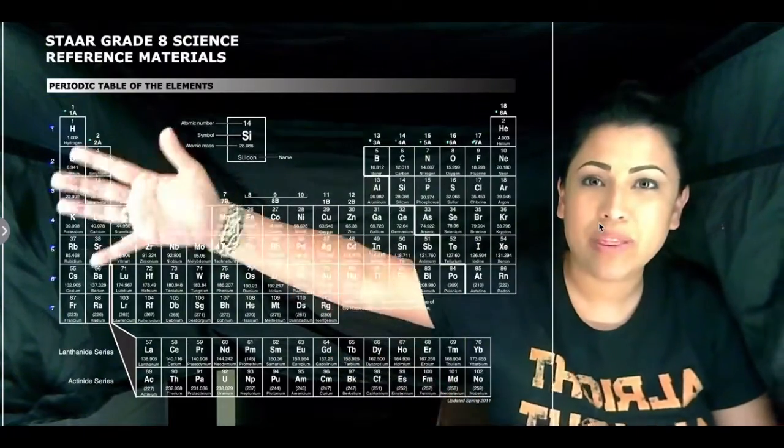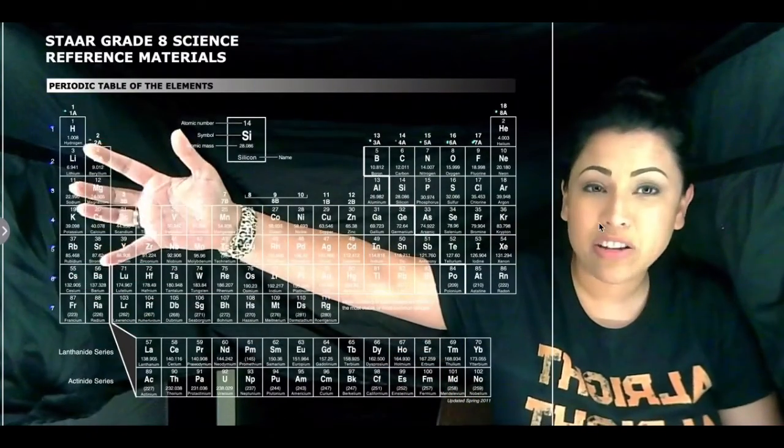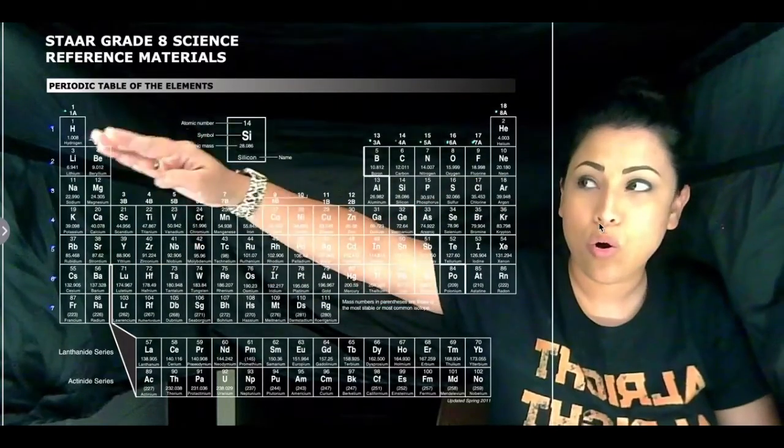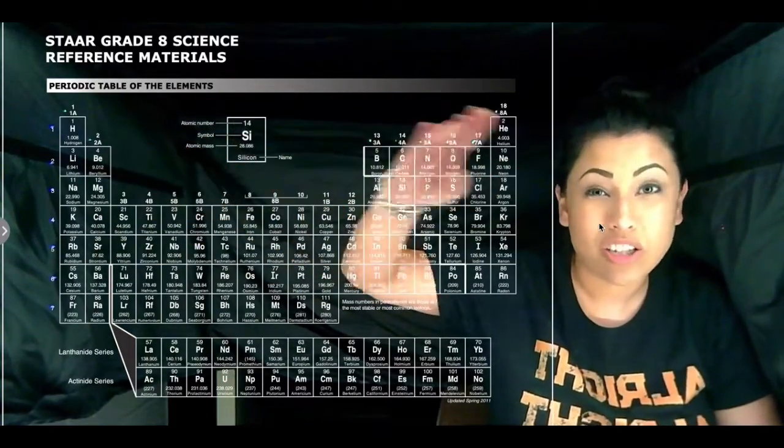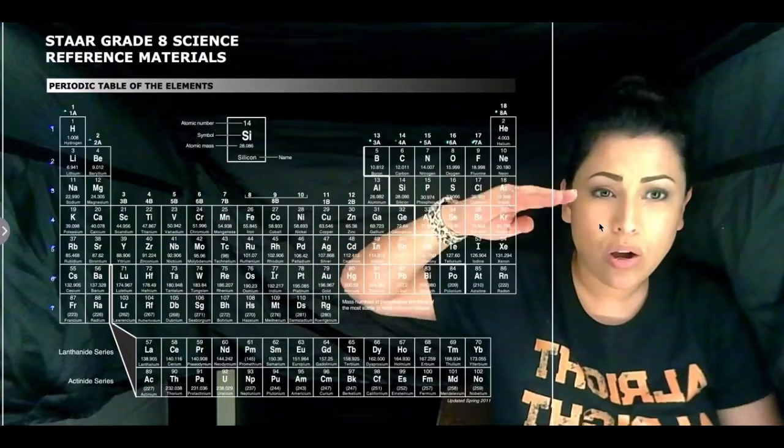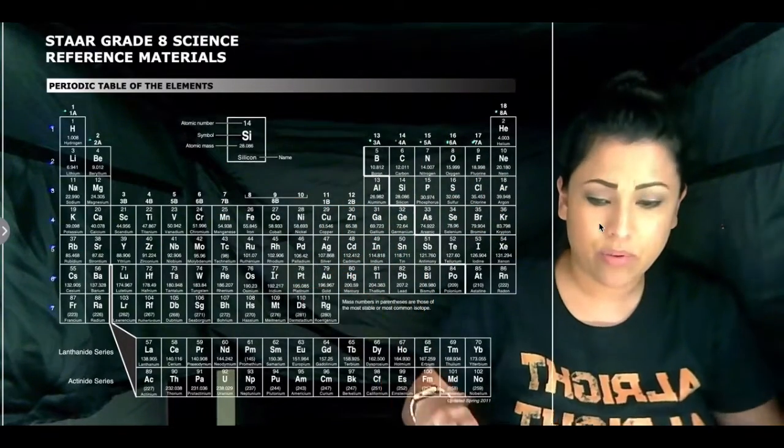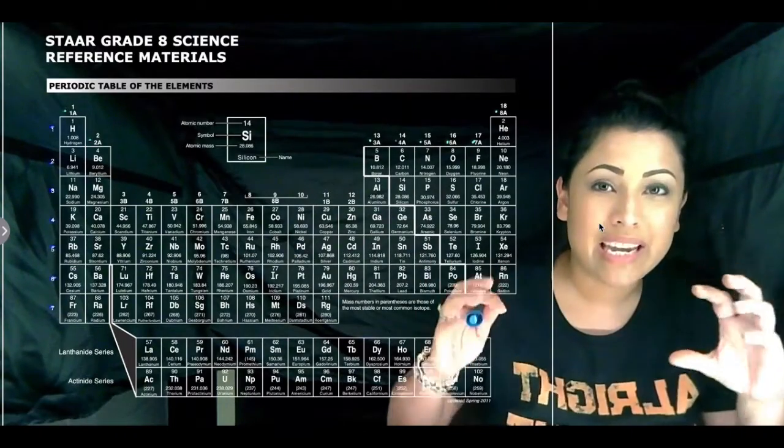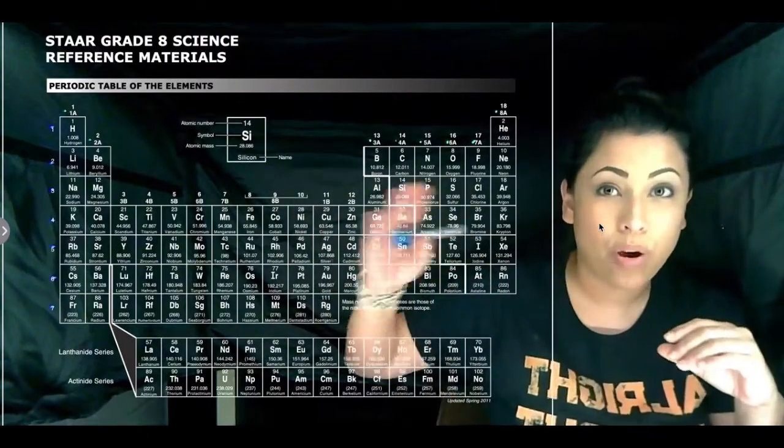So let's start with these numbers on the side. These are going to be called our periods. Our periods go horizontal. So these are also our rows. So what do the rows tell us anyway? Well, our rows tell us how many rings or energy levels each atom has in that row.